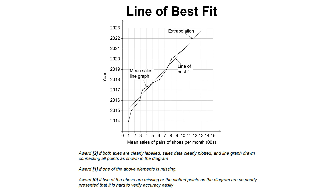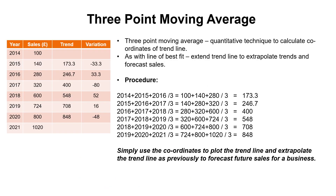The line of best fit should bisect your sales data — go through the middle. Then if you want to forecast future sales, you just extrapolate, which means extend from where your trend line stops at the end of the sales data. With a ruler, you just draw a broken line up to whichever year it is, and then read off the forecast sales figure for the business.